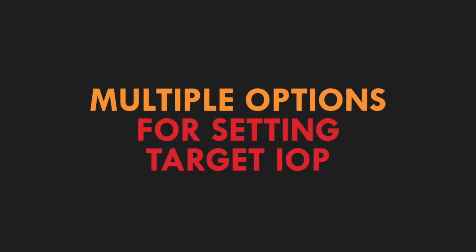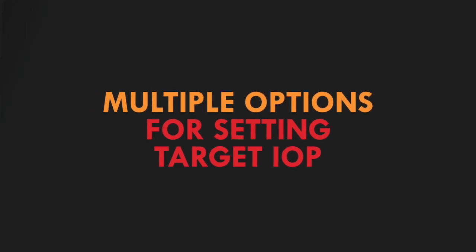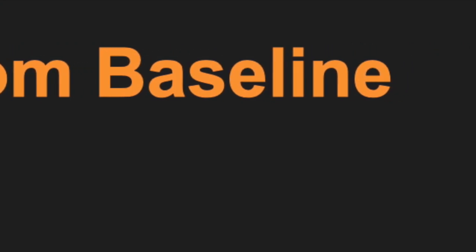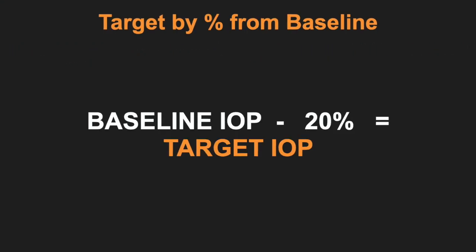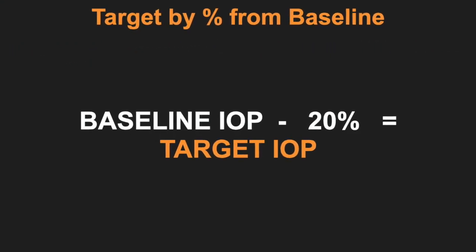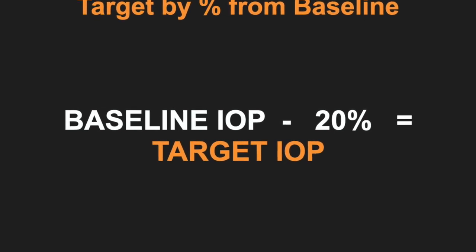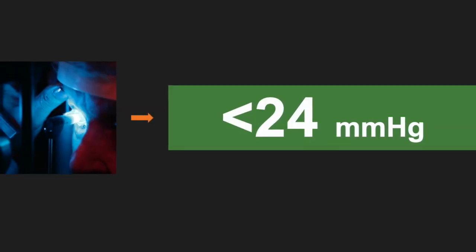What are some strategies for setting a target eye pressure? There are multiple strategies to determine a target eye pressure. One method is to subtract a percentage from the baseline IOP. For example, in the OATS study, the target IOP was set as a 20% reduction from baseline or IOP less than 24 mmHg, whichever was lower.